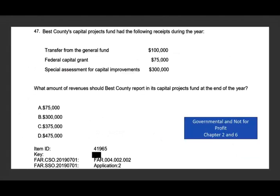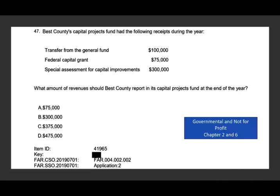Let's take a look at this question. Best County's capital project fund had the following receipts during the year: transfer from the general fund $100,000; federal capital grant $75,000; special assessment for capital improvement $300,000. What amount of revenues should Best County report in its capital project fund at the end of the year? The transfer from the general fund is not considered revenue of the capital project fund. The federal capital grant of $75,000 is included. The special assessment for capital improvement of $300,000 is also included. So both of those total $375,000. This topic is covered in chapter 10 briefly, and in chapter 6 I talk a lot about the capital project fund.